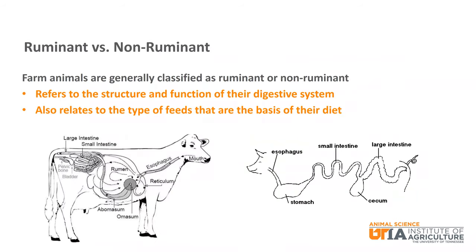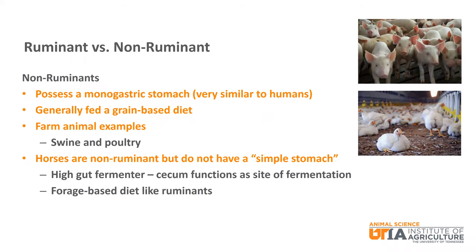Farm animals are generally classified as ruminants or non-ruminants. These classifications refer to the structure and function of their digestive system as well as the type of feed that is the basis for their diet. Non-ruminant animals possess a monogastric stomach and are sometimes called simple stomached. Their structure and function is very similar to that of humans. They primarily eat a grain-based diet; farm animal examples include swine and poultry.